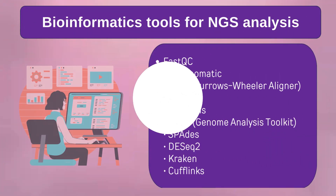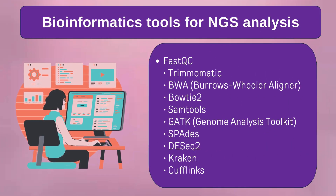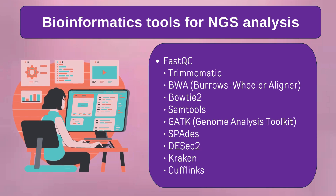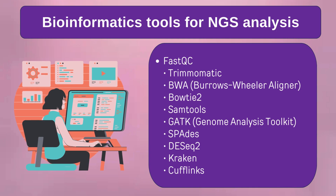NGS data analysis requires specialized bioinformatics tools. For data quality control we have FastQC, which assesses raw sequence data quality. For data pre-processing we have Trimmomatic, which cleans and filters raw reads. For read alignment we have BWA and Bowtie, which align reads to a reference genome.